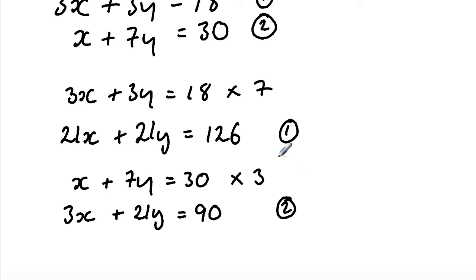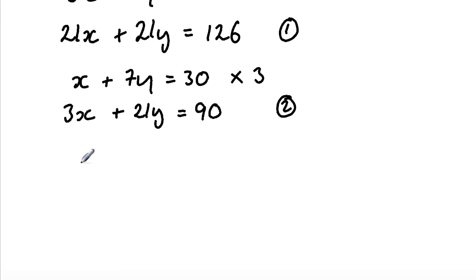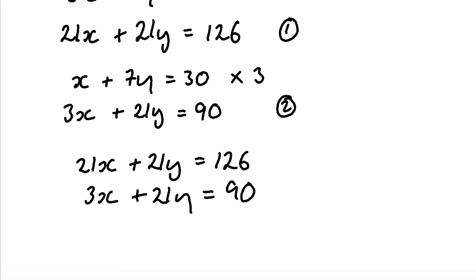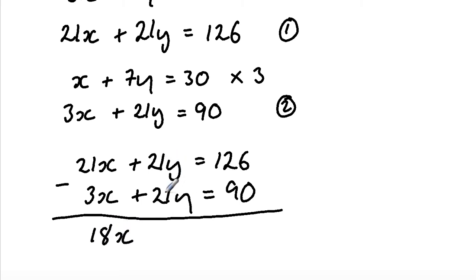Now I'm going to arrange them together: 21x plus 21y equals 126, and 3x plus 21y equals 90. To eliminate the y variable, I'm going to subtract the second from the first. So 21x minus 3x gives us 18x. 21y minus 21y gives us 0 — it cancels out. And 126 minus 90 gives us 36. So 18x equals 36, which means x is equal to 2.